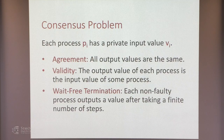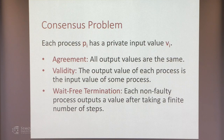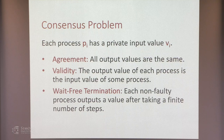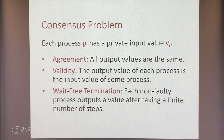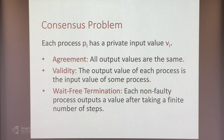More formally, each process PI has a private input value V_I. Each non-faulty process has to output a value after taking a finite number of steps — either it crashes or it has to output a value. These values must satisfy two properties: agreement, meaning all output values are the same, and validity, meaning the output value of each process is the input value of some process.